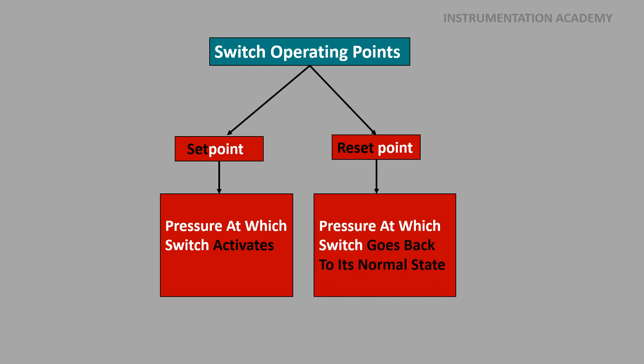The variation in pressure does not change the status of the switch until the set point is reached. When the set point is reached, the switch changes its state from NO to NC or NC to NO, and remains in the changed state until the pressure drops below the reset point.